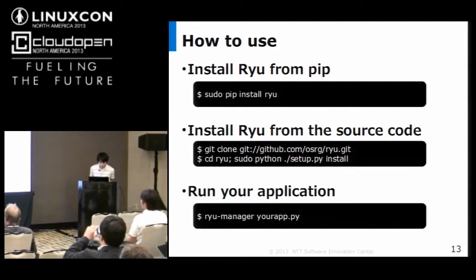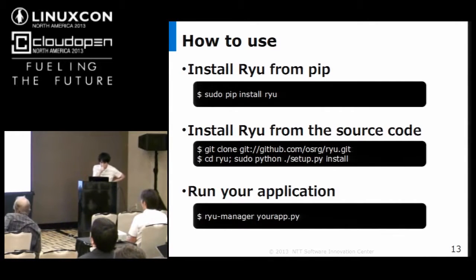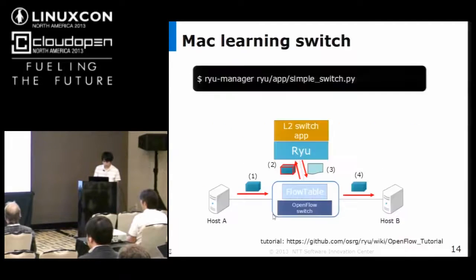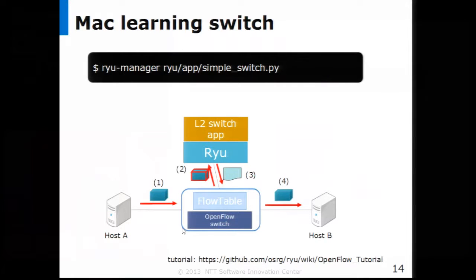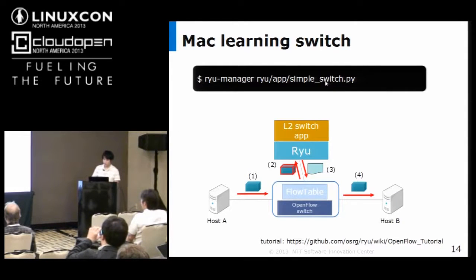First, I'll introduce installing Ryu. You have two options for installing Ryu. Installing from pip is very easy. And of course you can install Ryu from source code — for that case you need to download the code from GitHub and install it by hand. When you write your Ryu applications, you simply type this command to run your application. This is a Ryu sample application: SimpleSwitch.py. This is a MAC learning switch. MAC learning switch is a good tutorial for SDN beginners. This application is included in the GitHub repository.